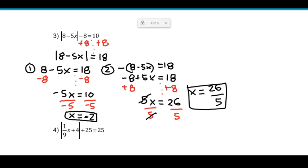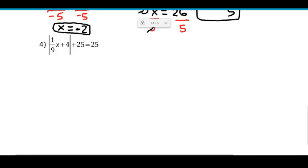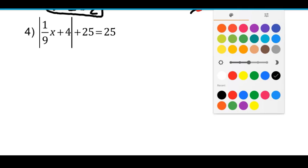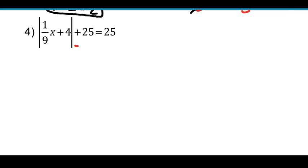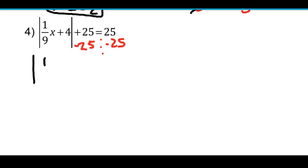Let's do one more. This time we have our absolute value quantity plus 25 equals 25. So remember, first step, isolate the absolute value. We have to subtract 25 from both sides. Then we have just our absolute value quantity, which has a fraction in it. That's okay. 1 ninth x plus 4, and the absolute value equals 0.